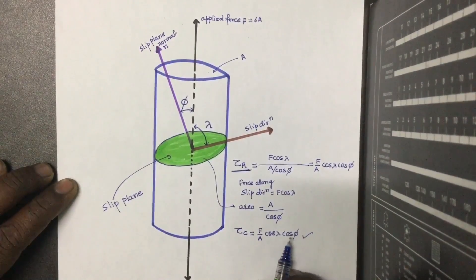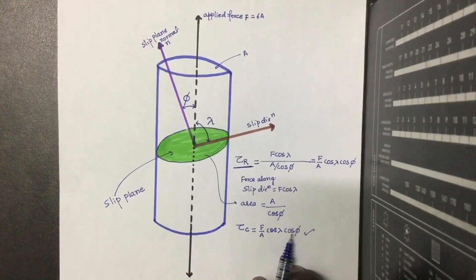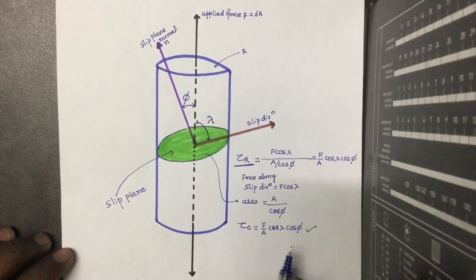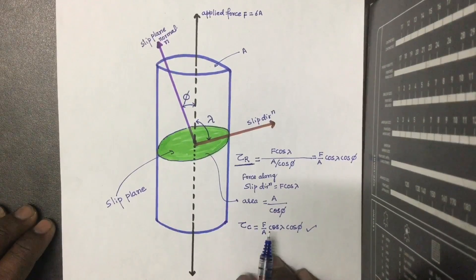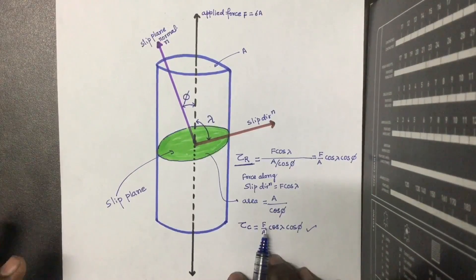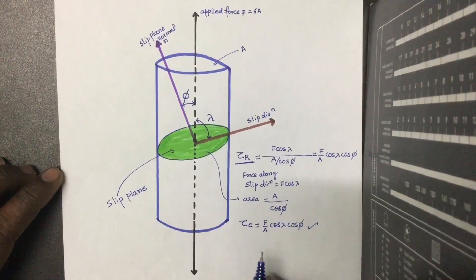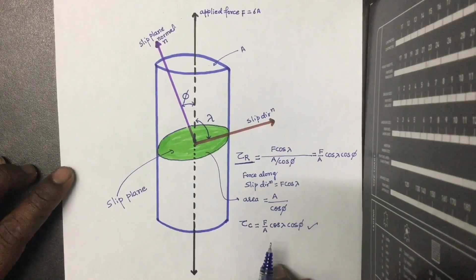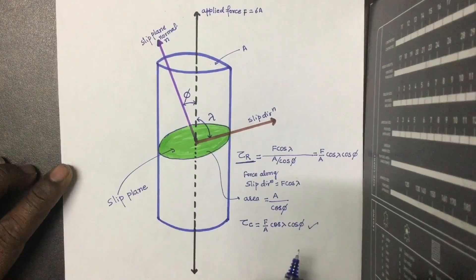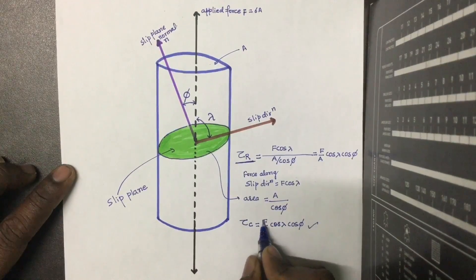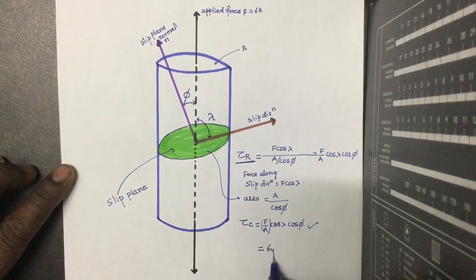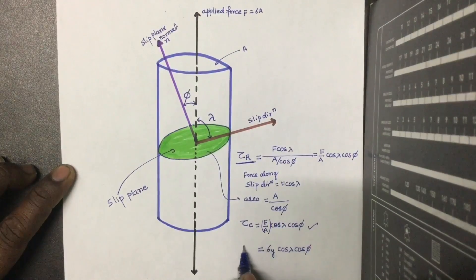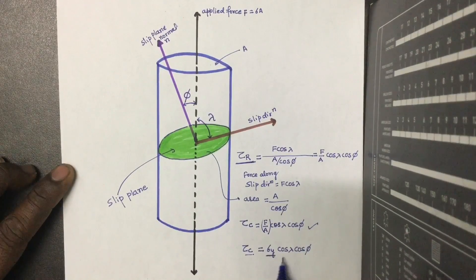From the stress-strain diagram, we know that slip occurs when the stress exceeds the yield stress. So F/A can be replaced by the yield stress σ_y. The expression for critical resolved shear stress becomes: τ_c = σ_y · cos(λ) · cos(φ), where λ is the angle between applied force and slip direction, and φ is the angle between the slip plane normal and applied force.